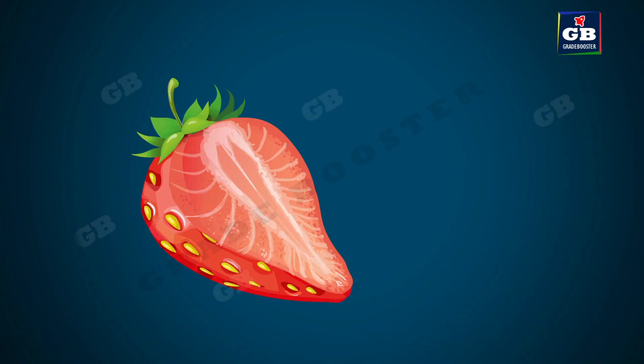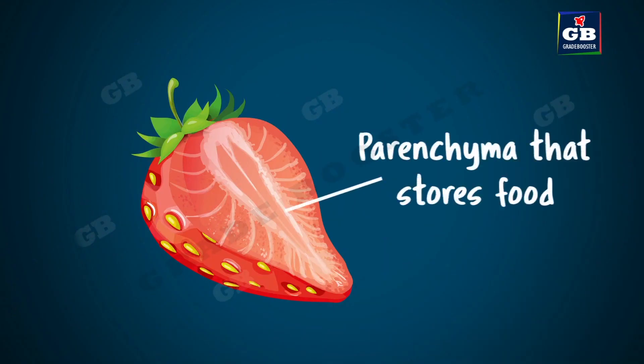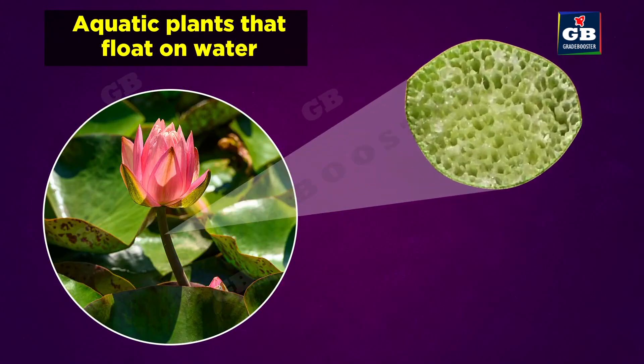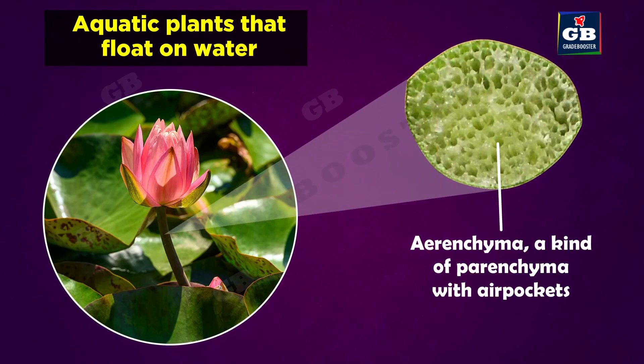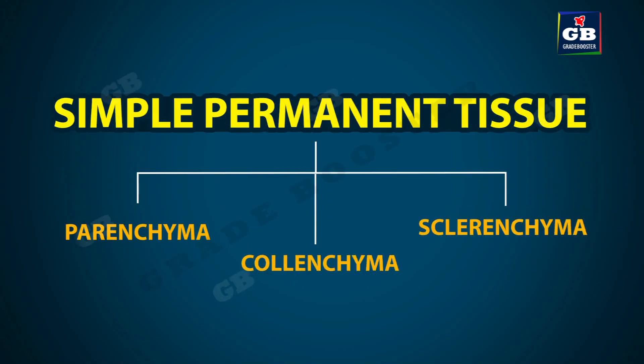Parenchyma stores food. The pulp of fruits is nothing but parenchyma tissue. Parenchyma also helps plants float in aquatic environments, as large air cavities are present in parenchyma which help the plant to float on water.